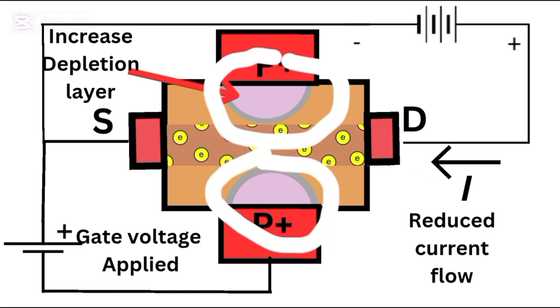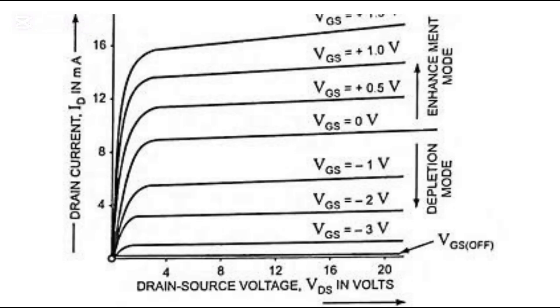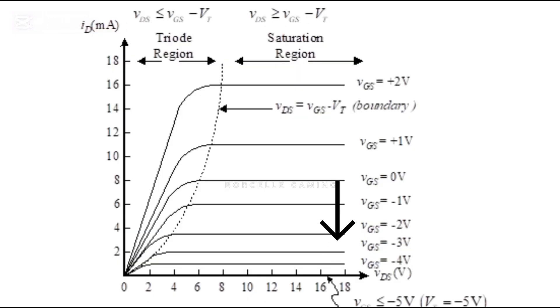Now if we plot IV curves, for enhancement mode all the curves start at zero current. No gate voltage, no current. But for depletion mode, the curves already show current at VGS equals zero. They drop lower with negative VGS and rise higher with positive.